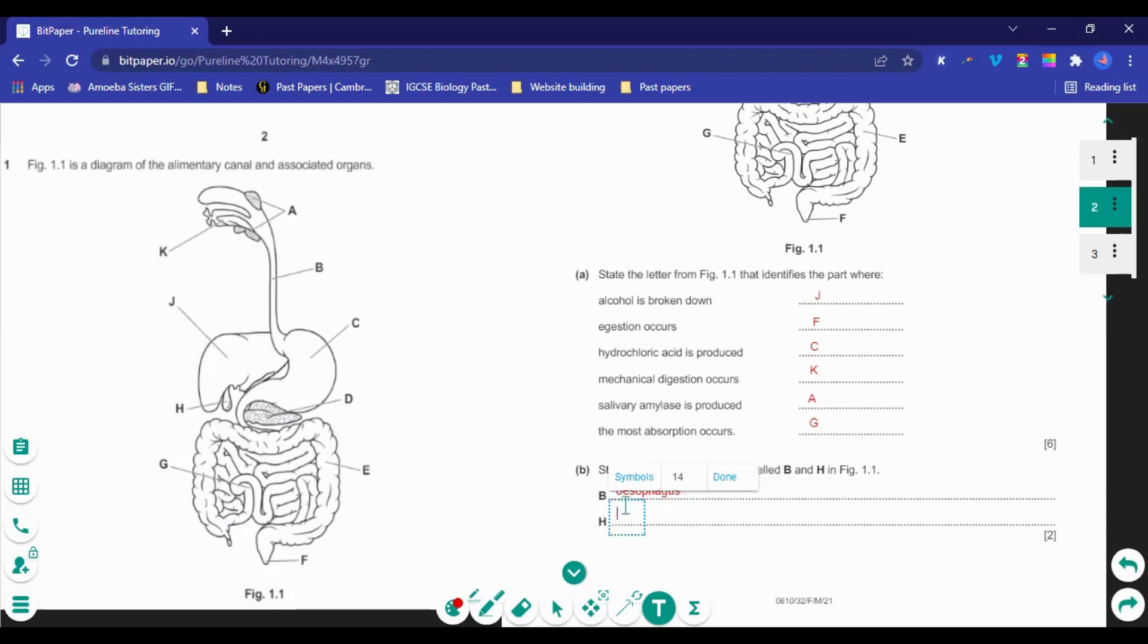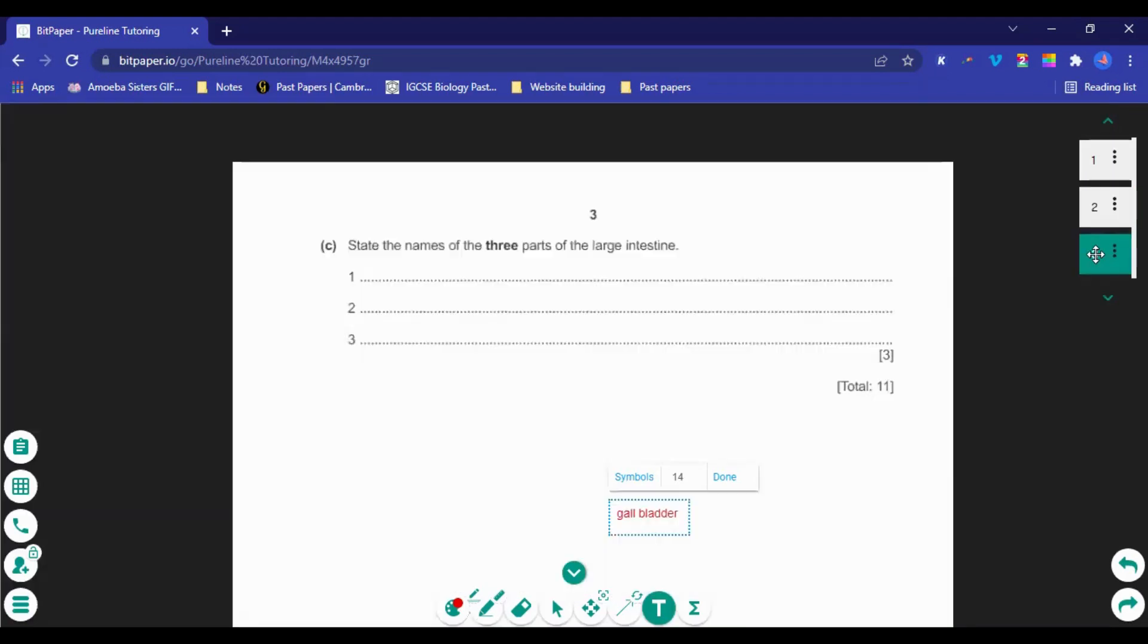H is that structure right under the liver where the bile is stored. Remember, if you said the gallbladder, that's absolutely correct. Almost done.